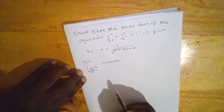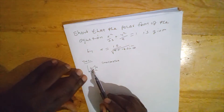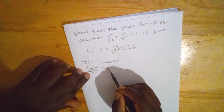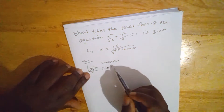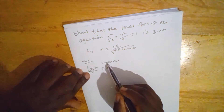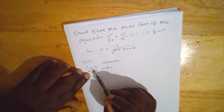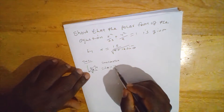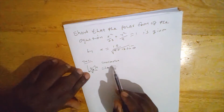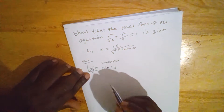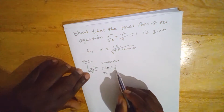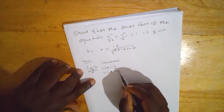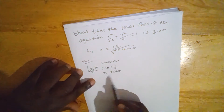Using SOHCAHTOA, sin theta is given by opposite over hypotenuse. The opposite side of this angle is y, and the hypotenuse is r. Therefore from this ratio, y is given by r sin theta.